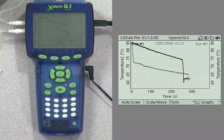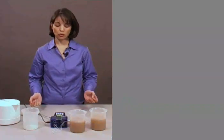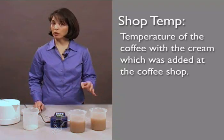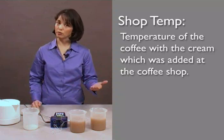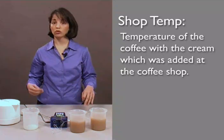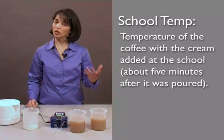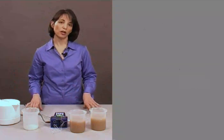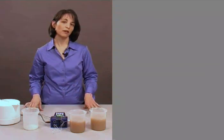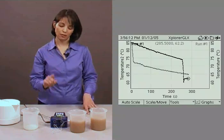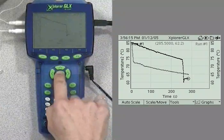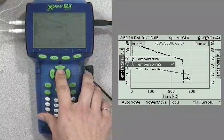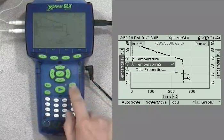And now what we want to do is be able to differentiate between our two runs. We want to name one of them the temperature from the shop, meaning we added the cream at the coffee shop. And we're going to call the other one school temp. So one is shop temp, the other one is school temp, meaning we added the cream when we got to school. So we're going to go back to our hot spots. Can you remember how to do that? You push the check mark to access your hot spots. And we push it again when we have the active hot spot we want. And this time we're going to select data properties.